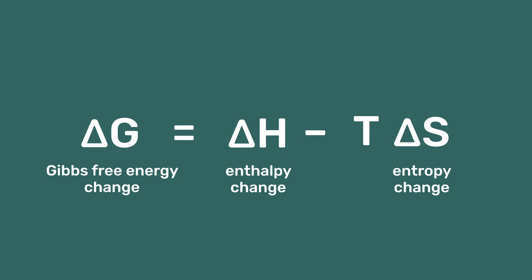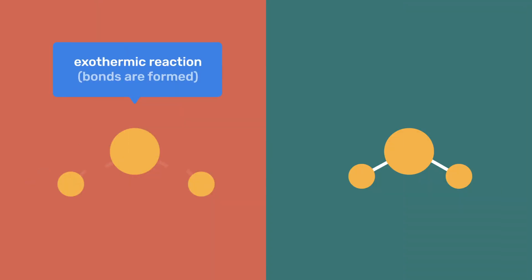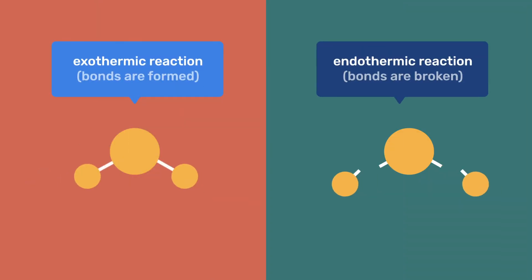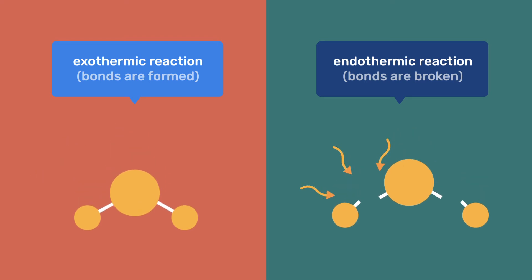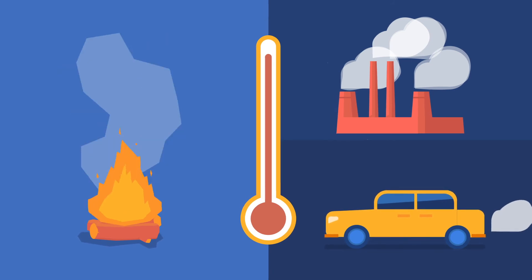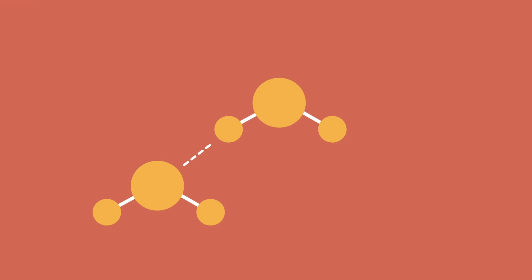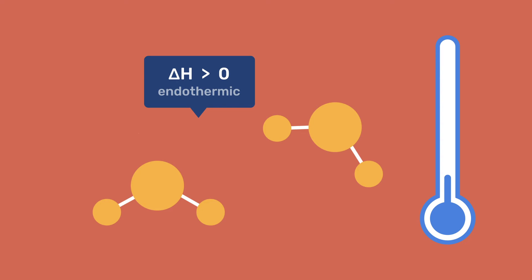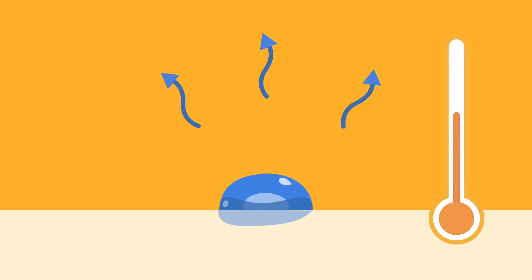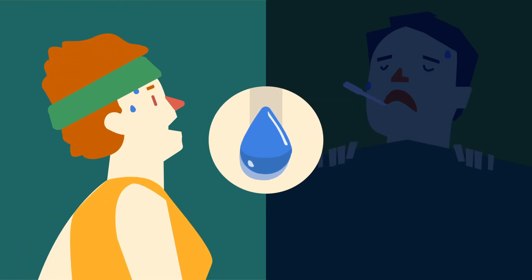The second property to consider is enthalpy. In chemistry, enthalpy changes are associated with the breaking and the formation of bonds. This tells us whether a reaction is exothermic or endothermic — respectively whether it releases or absorbs heat. The burning of wood is an exothermic reaction, as are all combustion reactions. Its delta H is negative because its final enthalpy is lower than its initial one. In contrast, endothermic reactions absorb heat and have a positive delta H. Water evaporation is an example of such an endothermic process, and this helps regulate our body temperature by sweating when we exercise or have a fever.